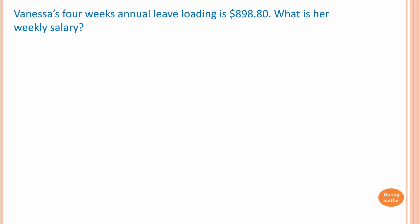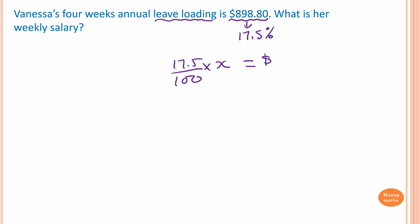Vanessa's 4 weeks annual leave loading is $898.80. What is her weekly salary? So $898.80 is just the holiday loading, or leave loading. That is 17.5% of her 4 weeks pay. So 17.5% of her 4 weeks pay times X — we don't know what X is, X is 4 weeks pay — which is equal to $898.80.